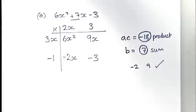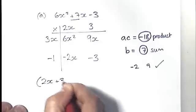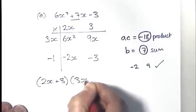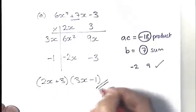So what I've done there is I've figured out my two brackets. The first bracket along the top there, and the second bracket down the side there. 2x plus 3, 3x minus 1. It's factorized.